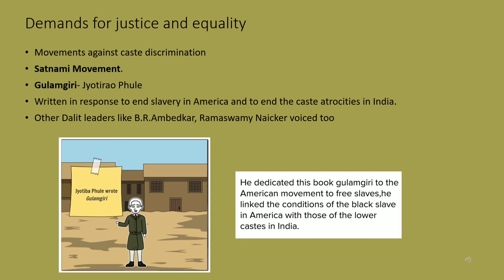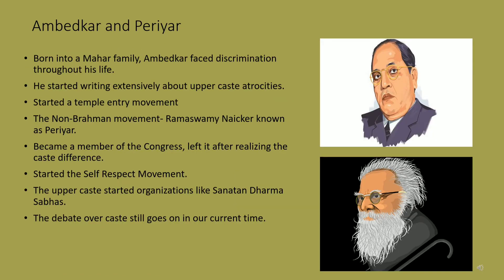Ghulam Giri was written by Jyotirao Phule, who stood up against the idea that Brahmans were Aryans and superior to others. He dedicated his book Ghulam Giri, meaning slavery, to the Americans who fought for the freedom of slaves. Baba Sahib Ambedkar was also a strong critic of caste. Born into a Mahar family, he faced caste atrocities from a very young age. After his higher studies, he returned to India and wrote extensively about upper caste power. He started a temple entry movement in 1927, and other such movements between 1927 and 1935 to make people realize the power of caste prejudices within society.